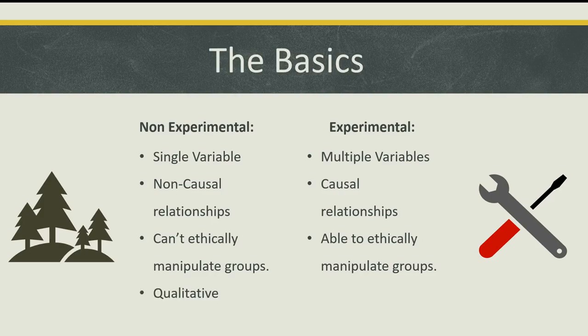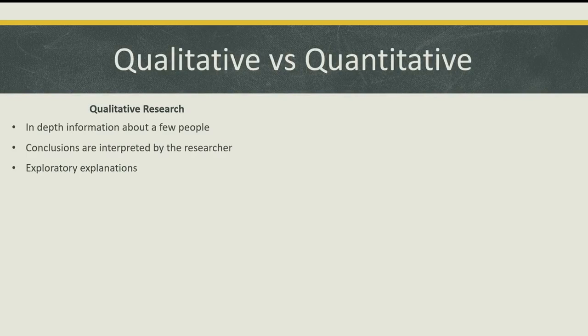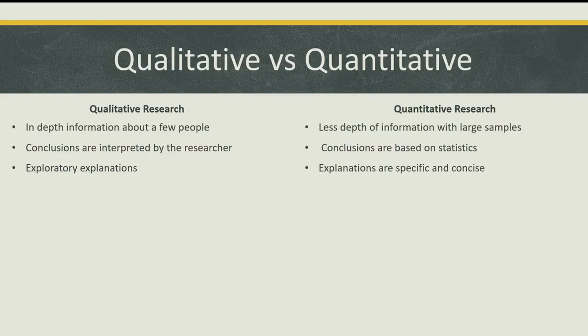Non-experimental research is qualitative, whereas experimental research is quantitative. Qualitative research is more in-depth information about one person or a group of people, and conclusions are often interpreted by the researcher, offering more exploratory explanations. Whereas quantitative research includes less depth of information with larger samples, and conclusions are based on statistics with specific and concise explanations specific to that research question or hypothesis.